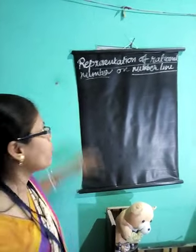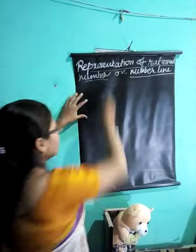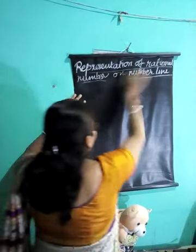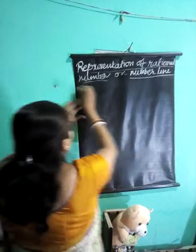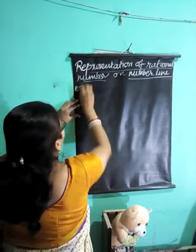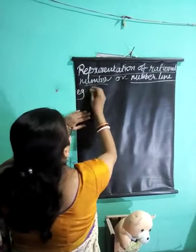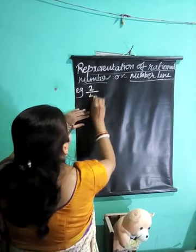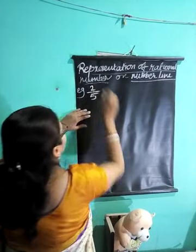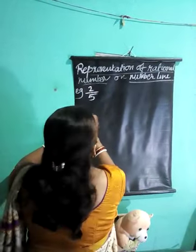Good morning children. Now let us go to the next topic, that is representation of rational numbers on a number line. Let us take it with an example. The number is 2 by 5, a rational number.